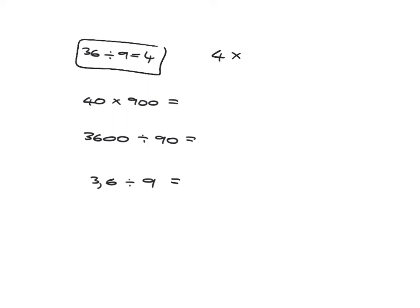Hopefully you remember the relationship between multiplication and division. So knowing 36 divided by 9 is 4, you know 4 times 9 is 36. So 40 times 900 is easy. It's going to be 36,000.